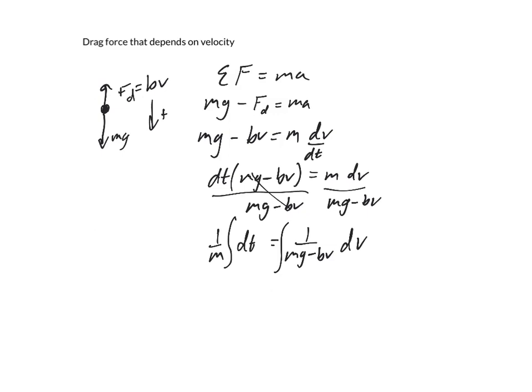I prefer the latter. So our limits over here, we're integrating with respect to time. So our starting time is 0. Our ending time is time t. And on the right-hand side, let's say that this object starts from rest. So we've got an initial velocity of 0 and an ending velocity of v. And that's what we're going to be solving for.